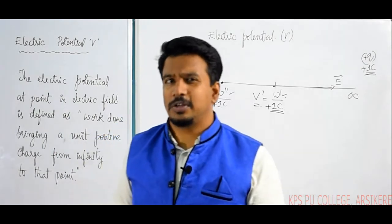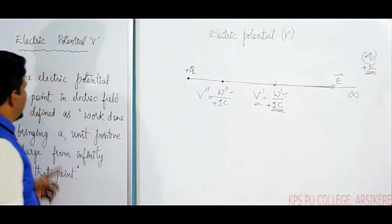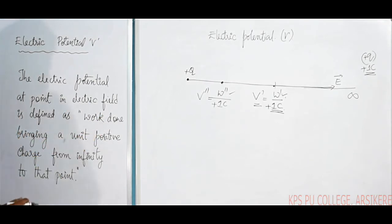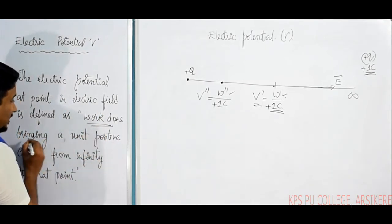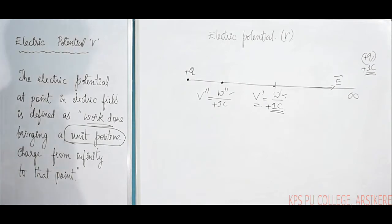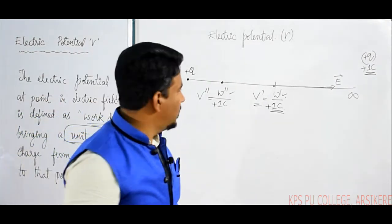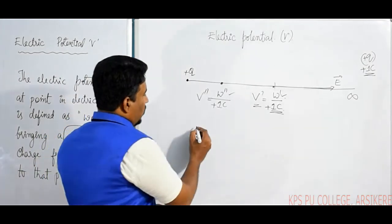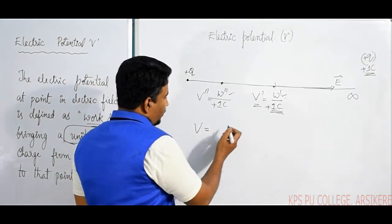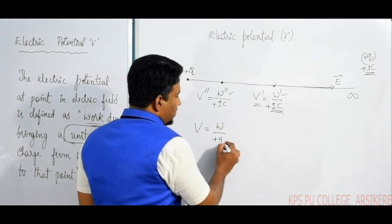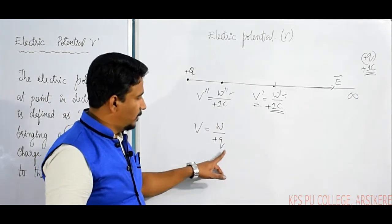Now the formal definition of Electric Potential: Electric potential at a point in an electric field is defined as the work done in bringing a unit positive charge from infinity to that particular point. That is called Electric Potential. V is equal to work done per unit positive charge.